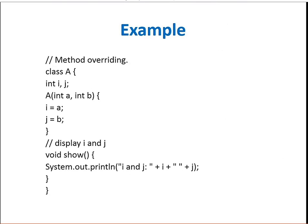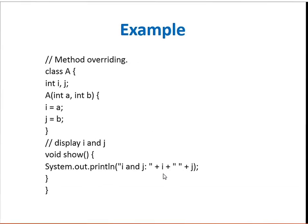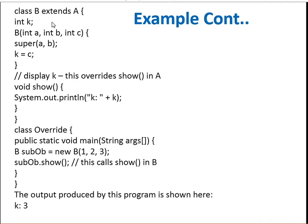Here is a small example. Class A has two variables int i and j. We have written a constructor A(int a, int b) and we are initializing the variables i and j with the values of a and b. Then class B extends class A, and class B demonstrates method overriding by the subclass.